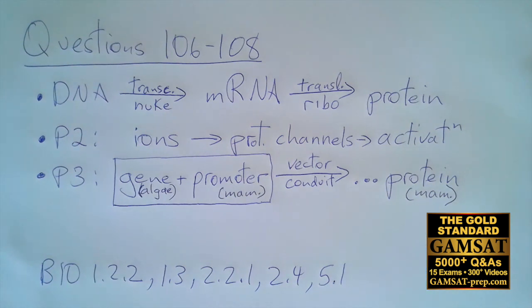Question 106. So this is just a little assumed knowledge. Ions crossing channel proteins leading to activation is depolarization. This is how neurons are activated.